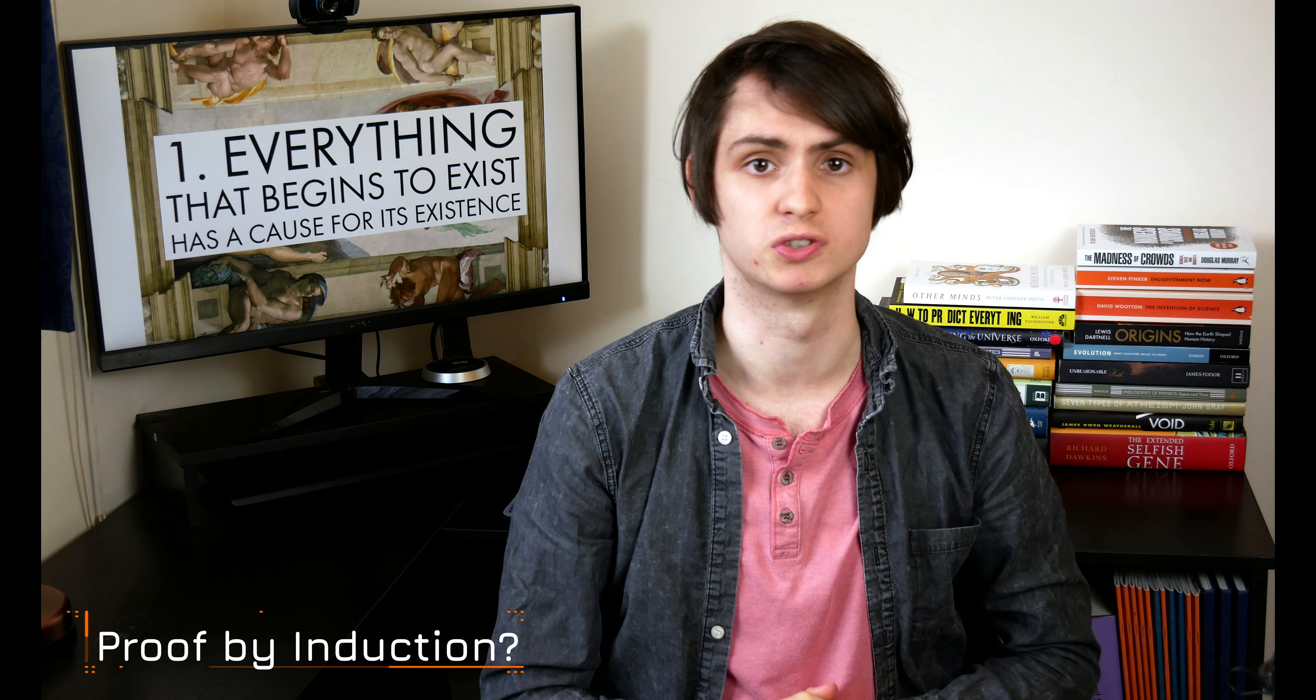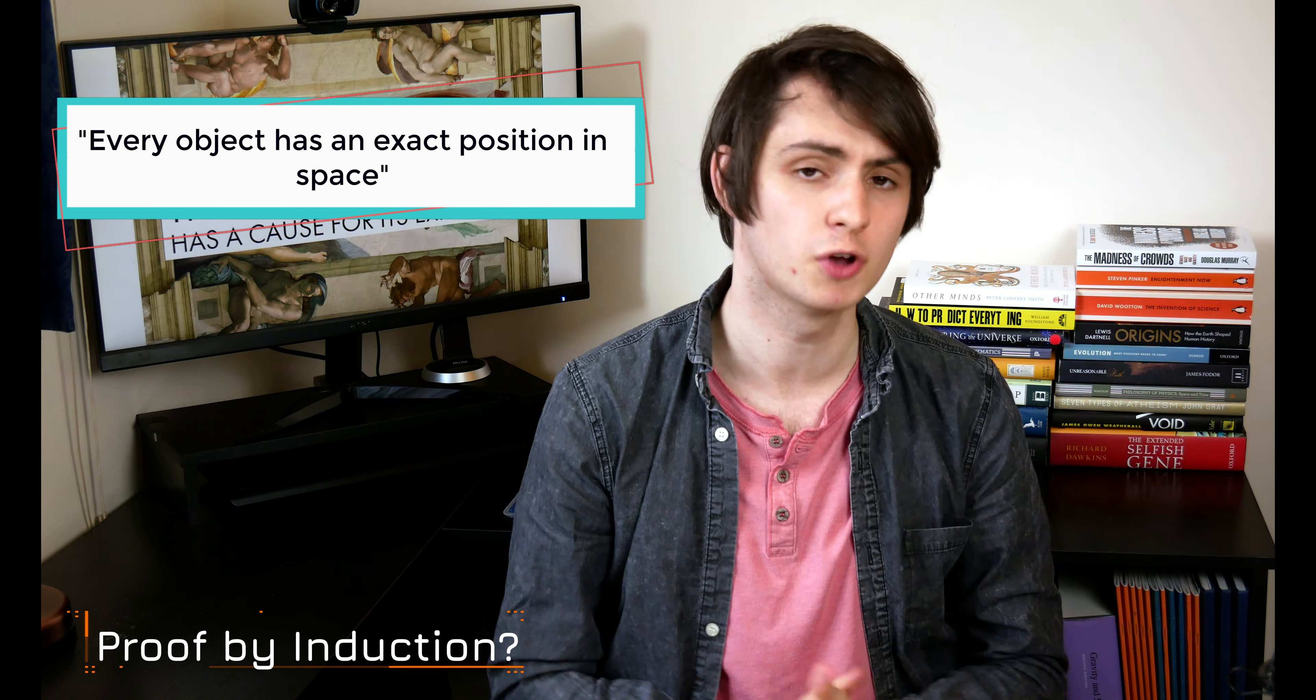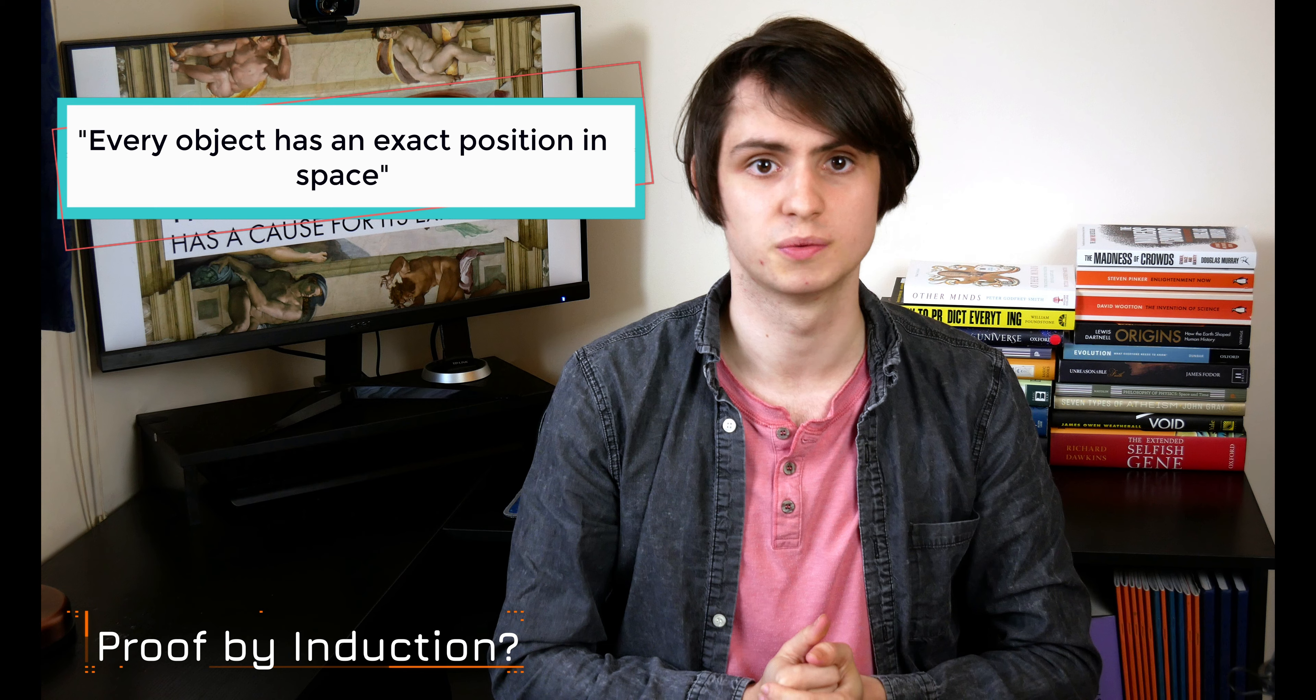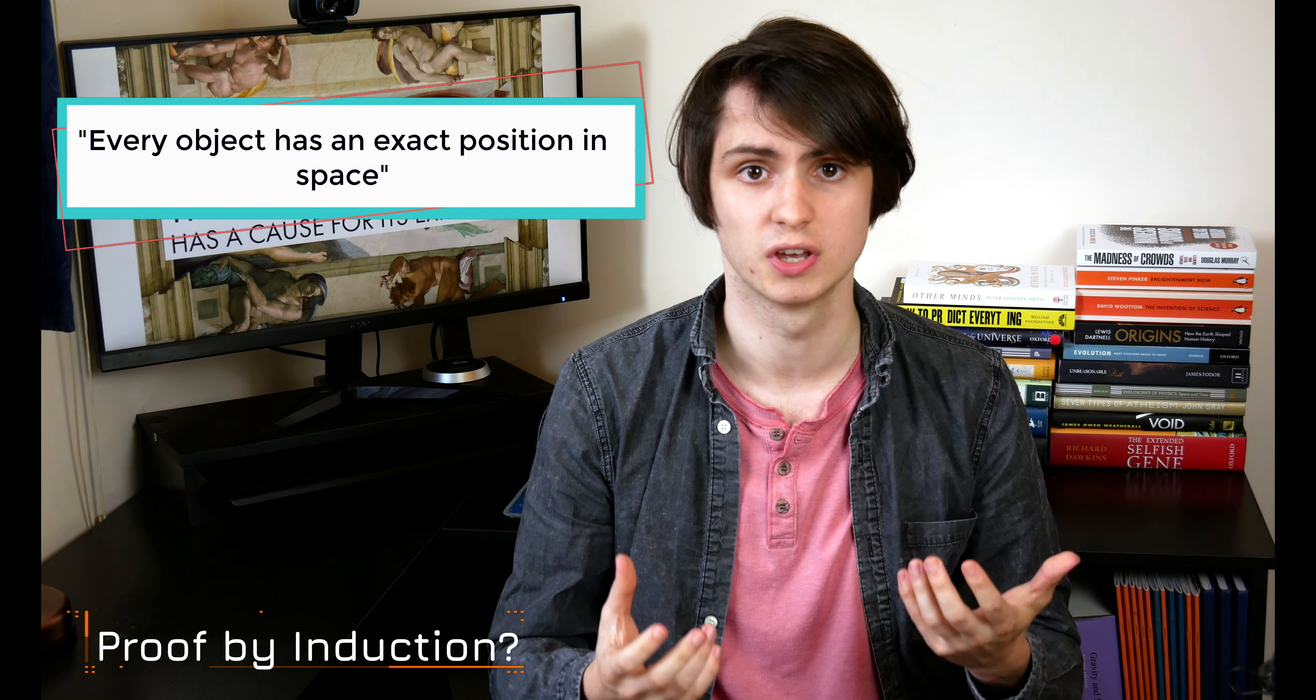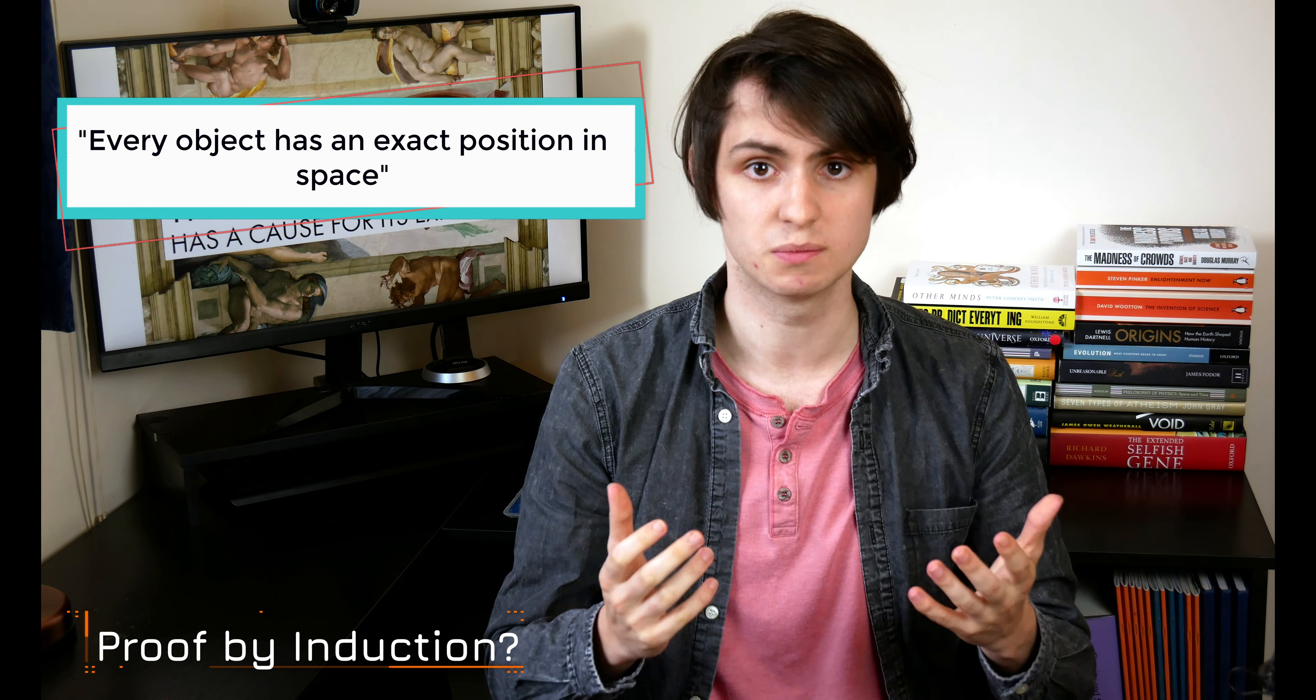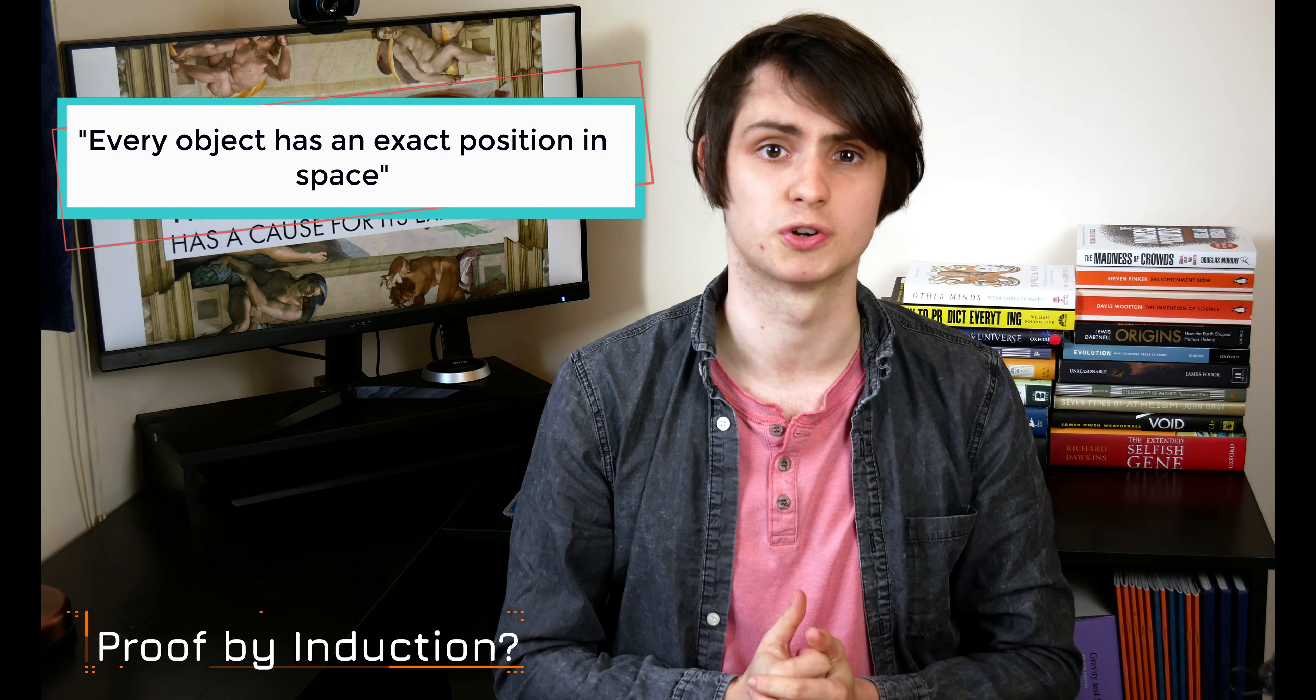But here's the thing, induction doesn't always work. Suppose you were a physicist living before the development of quantum theory, wondering whether the statement, every object has an exact position in space, was true. To a pre-quantum physicist, everything in their experience would have confirmed this statement. Look at anything around you, it looks like it has an exact location. By induction, a pre-quantum physicist would have to accept this as a true law. But this would be an example of induction leading you astray. Now that quantum theory has been developed, we know that it isn't true that all objects have an exact position. Small things like atoms and electrons don't have well-defined positions in space. The statement, every object has an exact position in space, is wrong.